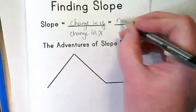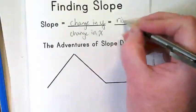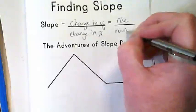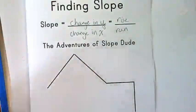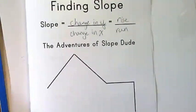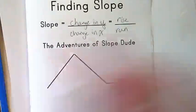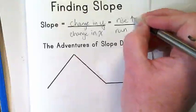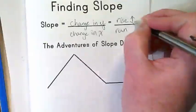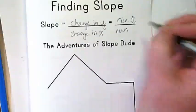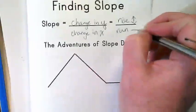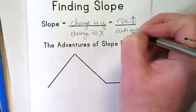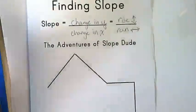This is also known as rise over run. I think of it visually as on the graph: we go up or down first, and then we go left or right when we are graphing slope.